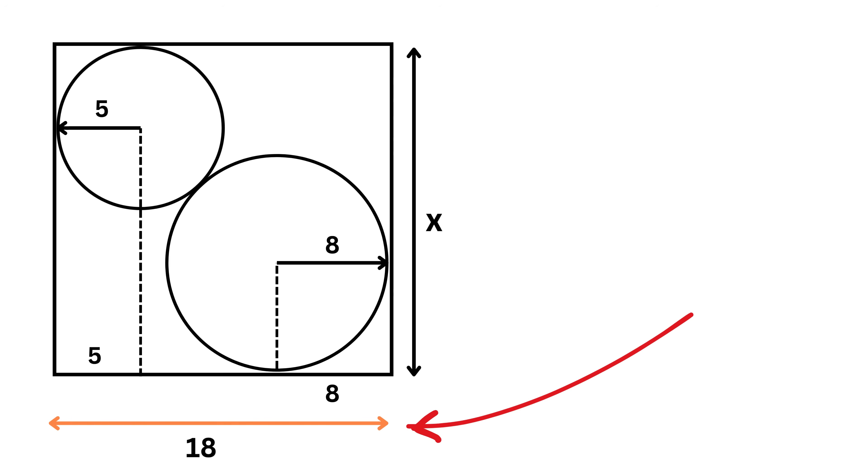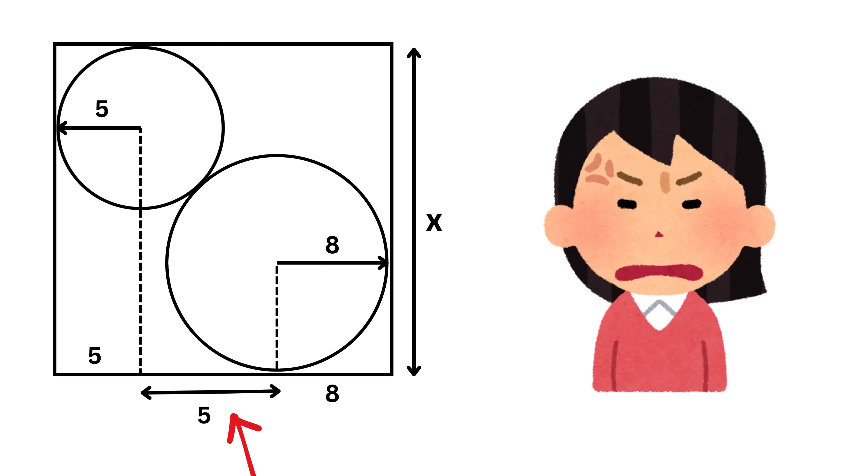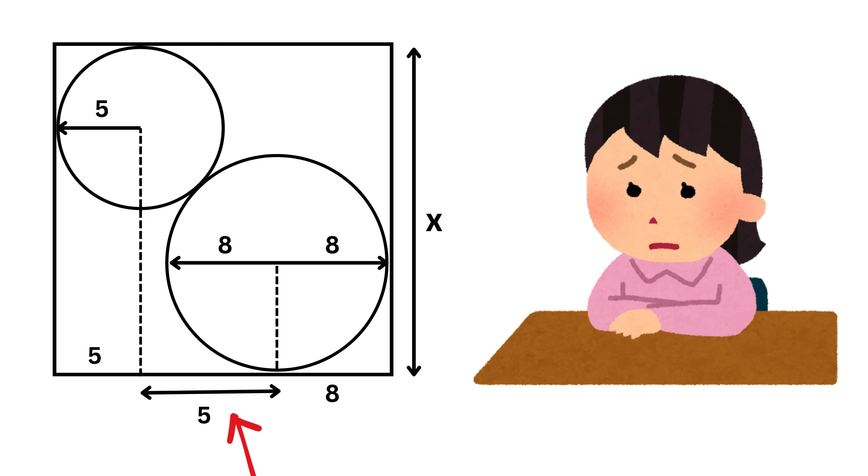If this entire thing is 18 units, then this piece will be equal to 18 minus 5, minus 8 or 5 units. But if this is of length 5, then how can this be of length 8 units? Which means this is an impossible problem. Or is it?